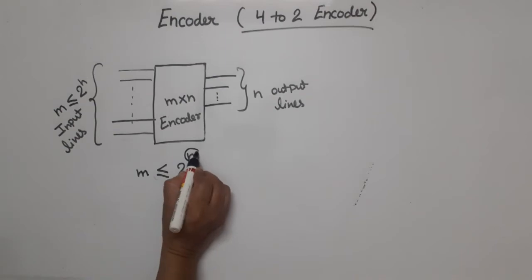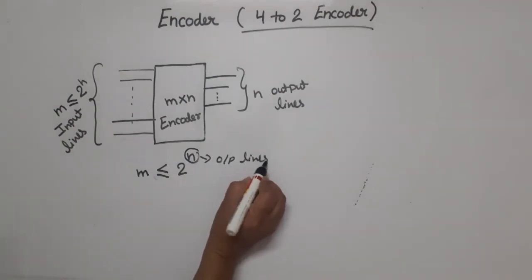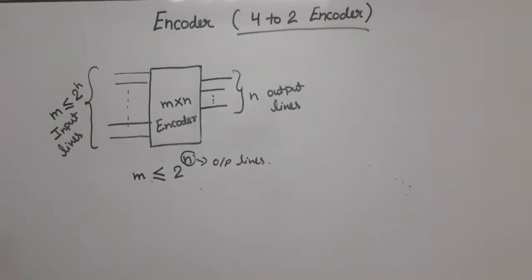Encoders generate binary combinations corresponding to the input signal. For example, here we have a 4-to-2 encoder.